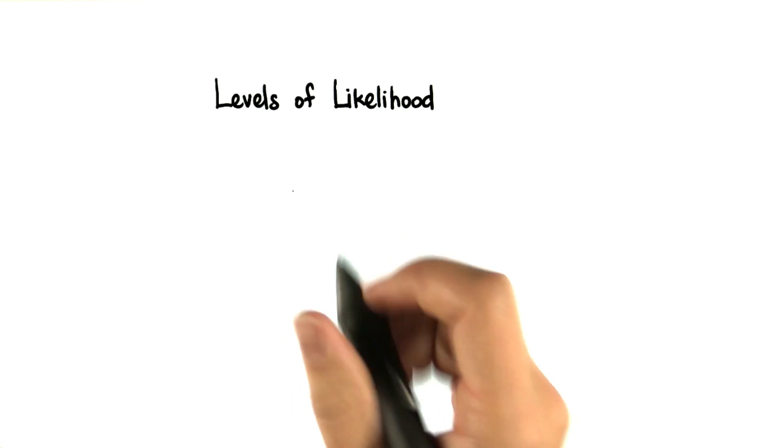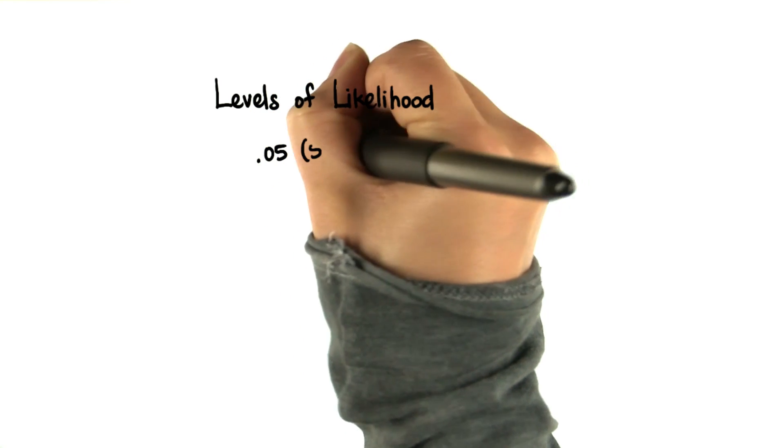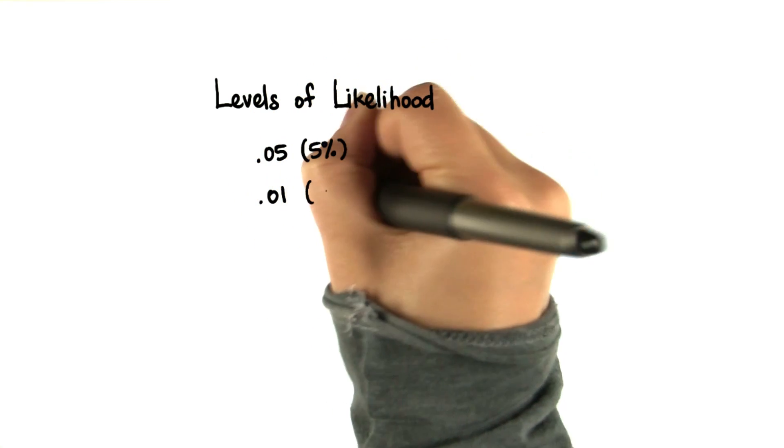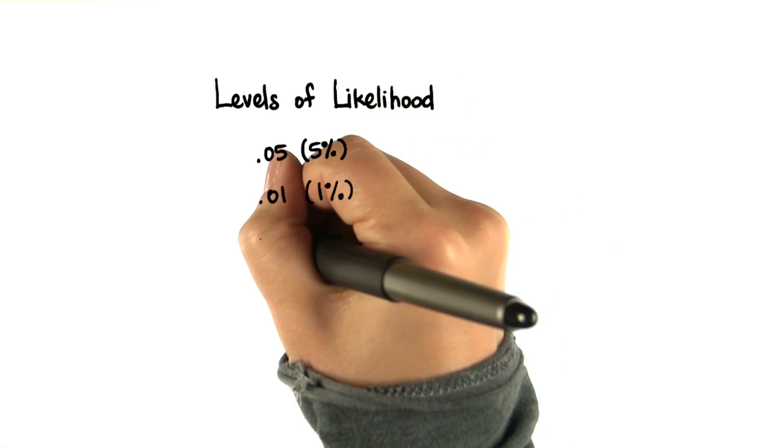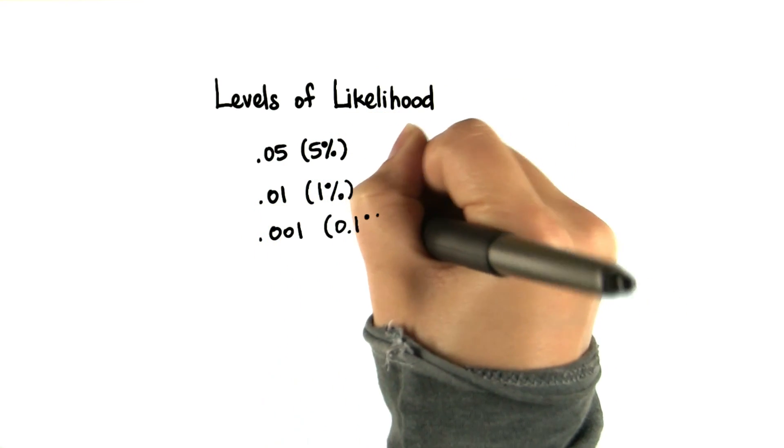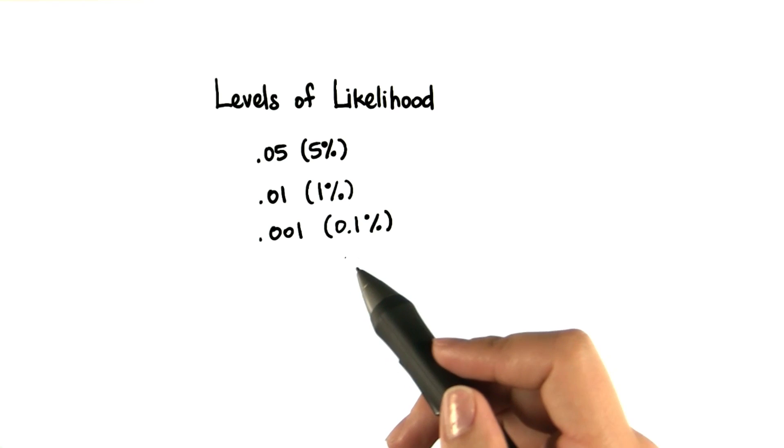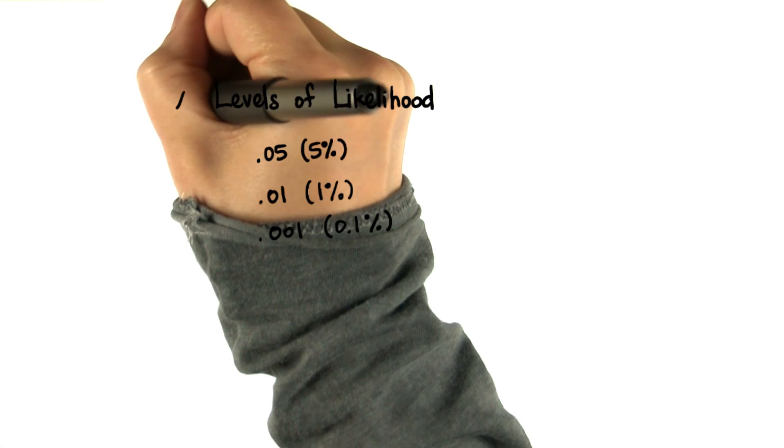If the probability of getting a sample mean is less than 0.05, or 5%, 0.01, or 1%, or 0.001, which is 0.1%, then it's usually considered unlikely. Getting a probability less than 0.1% is just very unlikely. These are called the alpha levels.